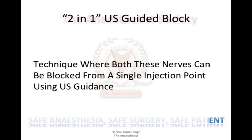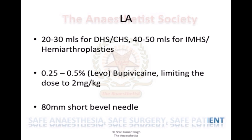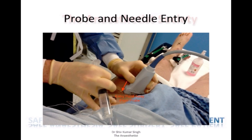For this procedure, the patient lies supine. We use 20 to 30 mLs of local anesthetic for DHS or CHS, and 40 to 50 mLs for IMHS or hemiarthroplasty — using 0.25 to 0.5% levobupivacaine, limited to 2 mg per kg body weight. The probe is placed below the inguinal ligament; it's important to mark the anterior superior iliac spine and pubic tubercle and draw a line over it. The needle comes from the lateral side near the anterior superior iliac spine.